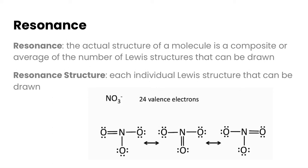In this video we're going to take a look at resonance, resonance structures, as well as coordinate covalent bonds. Let's start with resonance then. Resonance is defined as the actual structure of a molecule is actually a composite or an average of the number of Lewis structures that can be drawn. A resonance structure is each individual Lewis structure that can be drawn.